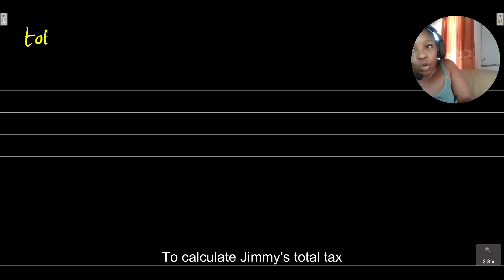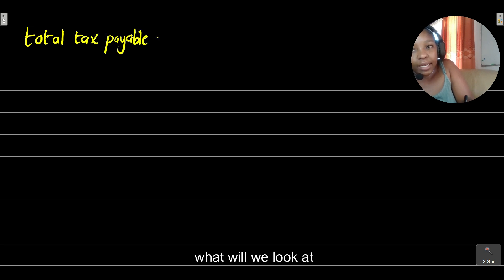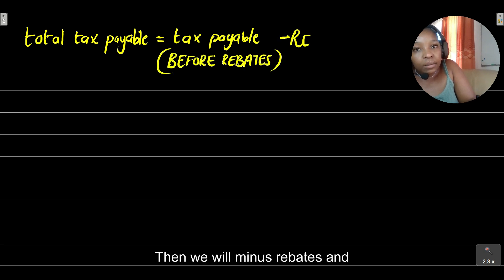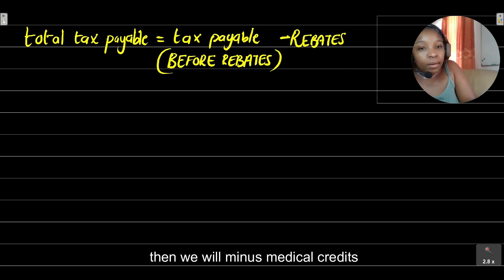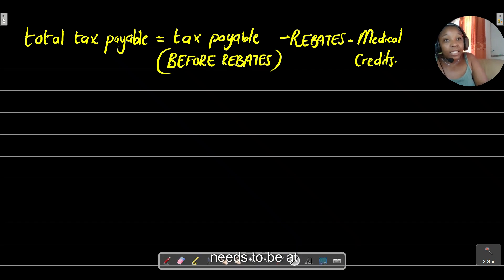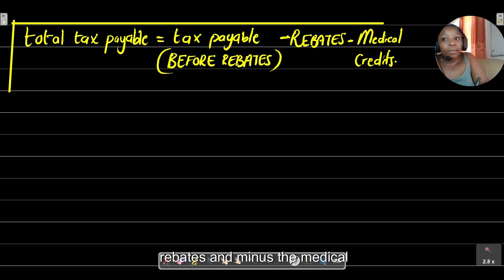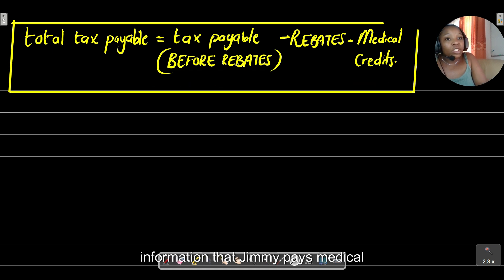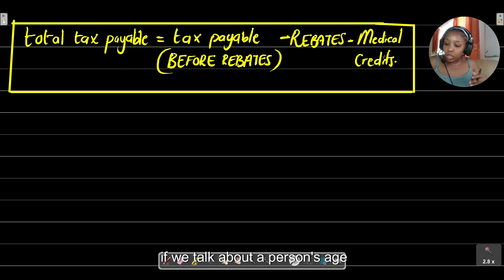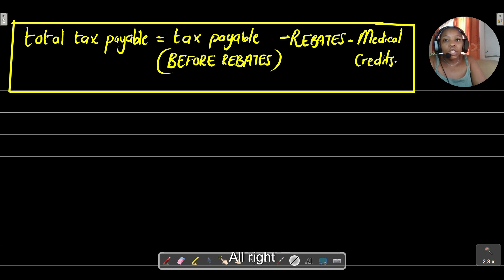To calculate Jimmy's total tax payable, we need to focus on three things: first, find the tax payable before rebates; then minus the rebates; then minus the medical credits. We need to subtract rebates because of Jimmy's age, and subtract medical credits because he pays medical aid.